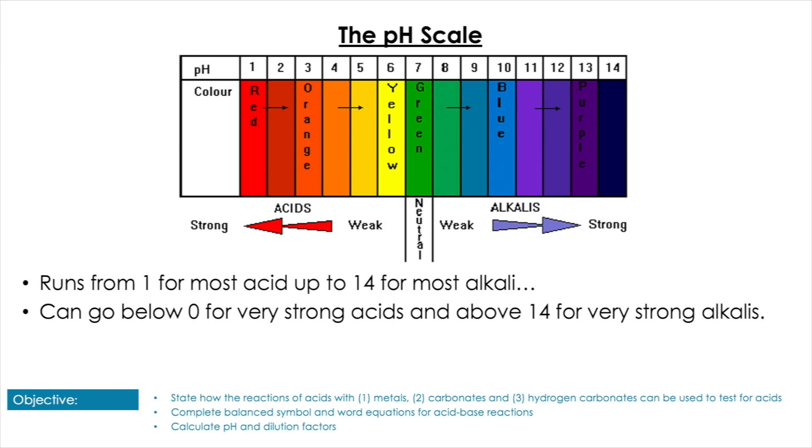So now we want to have a look at the pH scale and dilutions. So you may already be familiar with the pH scale. It goes from zero to 14, and zero indicates very acidic, 14 very alkali. They can actually go outside this range as we'll see when we do more calculations with this, but for now we want to look at what these numbers mean.